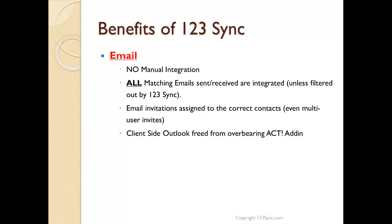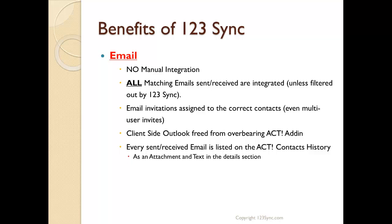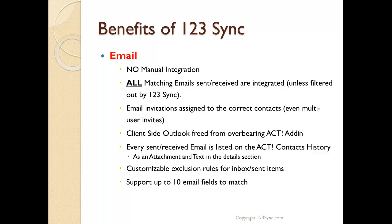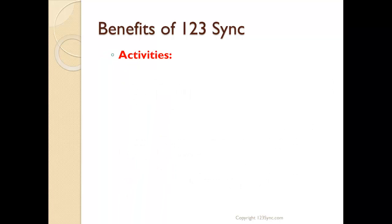Every sent and received email is listed on the ACT contact's history as an attachment, as text, or both. You can also add customizable exclusion rules for the inbox and sent items. We support up to ten email fields to match — most users have between three to seven emails they use for communication, and you can put those fields into ACT and we will match them. Finally, we do full subfolder integration, scanning all subfolders on the inbox for emails that should be integrated into ACT.